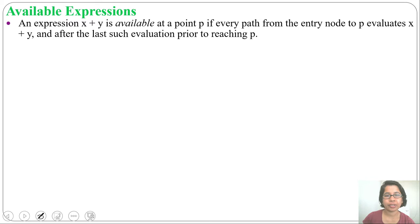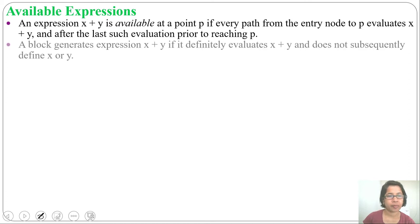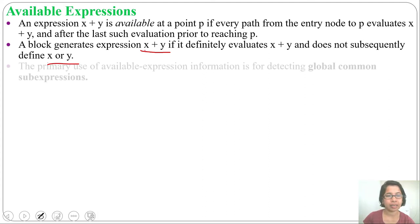Reaching definition is about availability of definition. Live variable analysis is about liveness of variable, and available expression is about availability of expression. If a block generates expression x plus y — meaning it definitely evaluates x plus y and does not redefine x or y — then we will say that it is available. The primary use of available expression is eliminating global common sub-expressions.